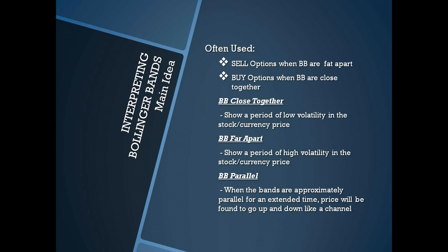When Bollinger Bands are close together, it shows a period of low volatility in the market — whether stock market or currency price. When Bollinger Bands are far apart, it shows a period of high volatility. It's especially important when Bollinger Bands are parallel — it doesn't have to be perfectly parallel, and it also has to be over an extended time. In that case, price will be found to go up and down like a channel, and you can benefit from that.